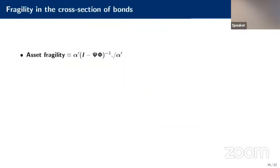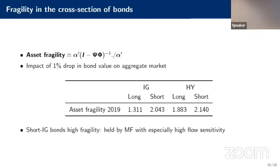Using these estimates we can quantify asset fragility — the impact of a 1% drop in bond value on the aggregate market. Looking at four asset classes, high yield bonds are more fragile than investment grade, and short-term bonds are more fragile than long-term bonds. Importantly, investment grade short-term bonds are also highly fragile, primarily driven by the fact that they have a high share of flighty mutual funds holding them.